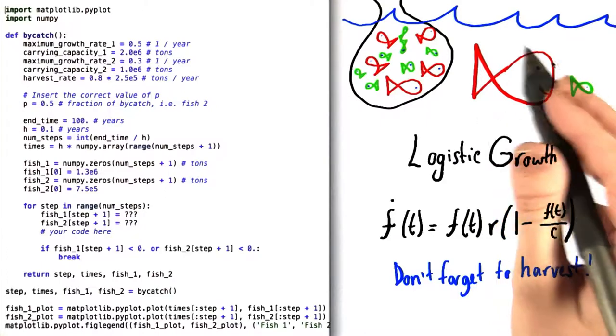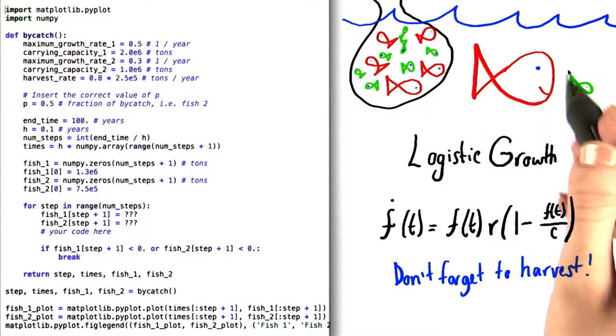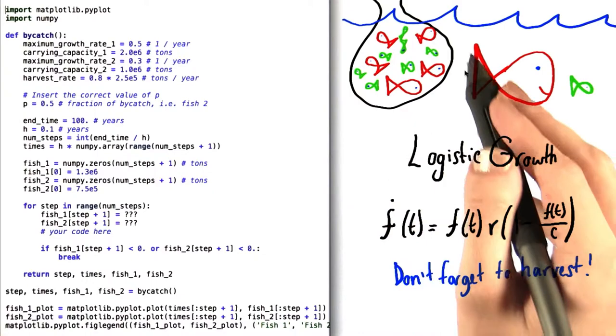However, whenever we try to catch the red fish, we also end up catching a bunch of these smaller green fish, as you can see from the contents of our net right here.